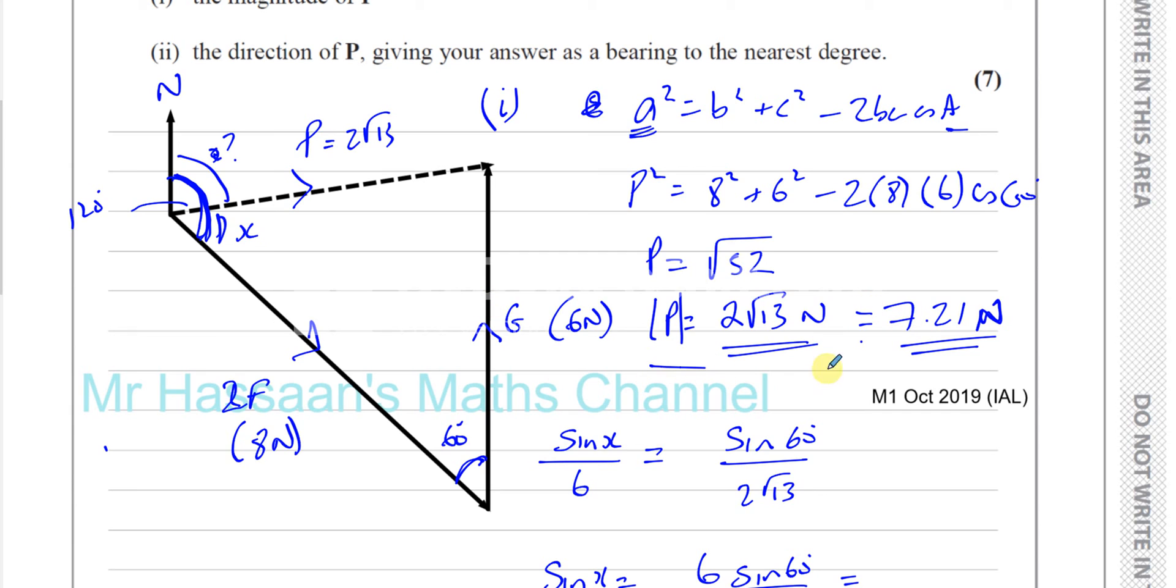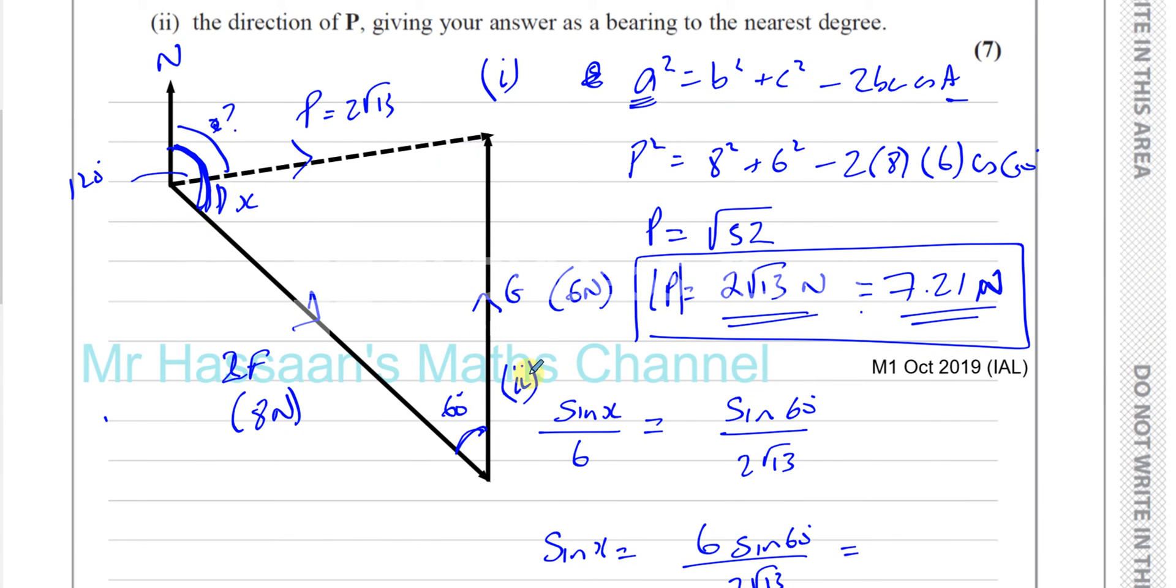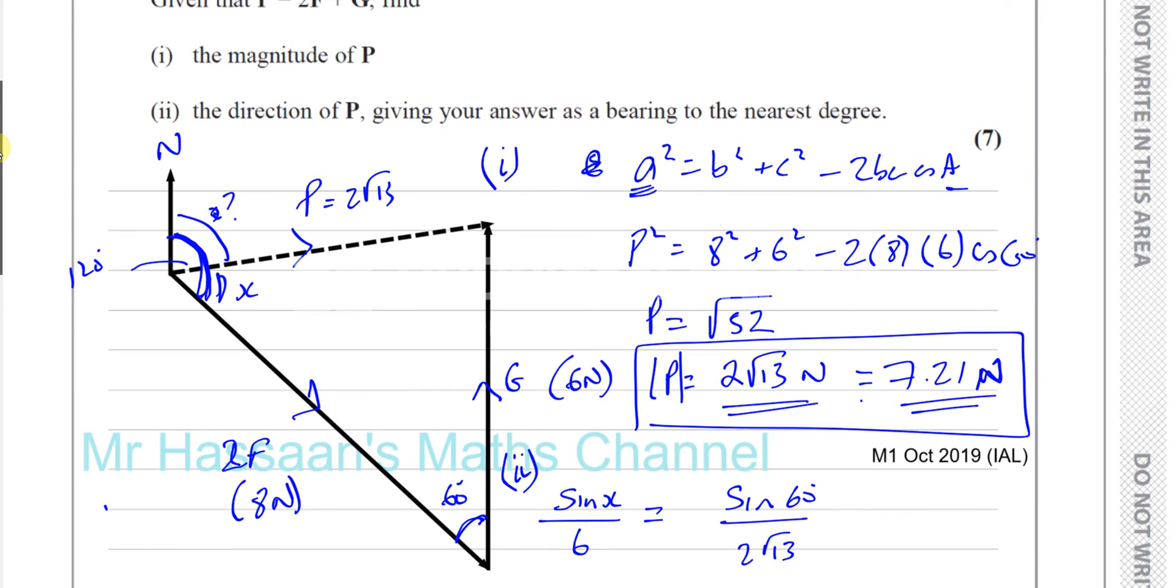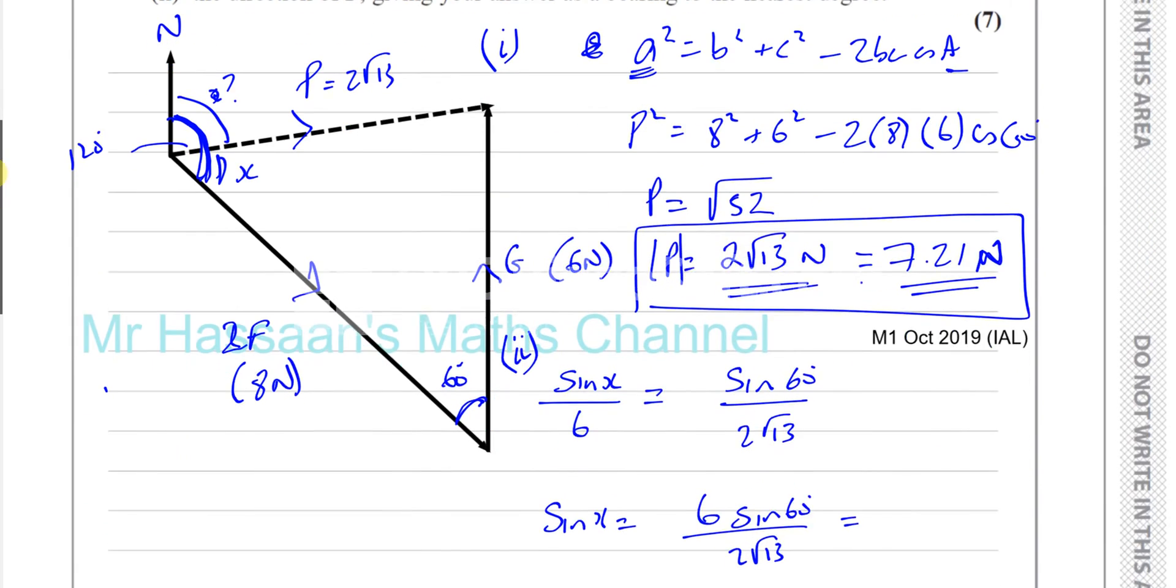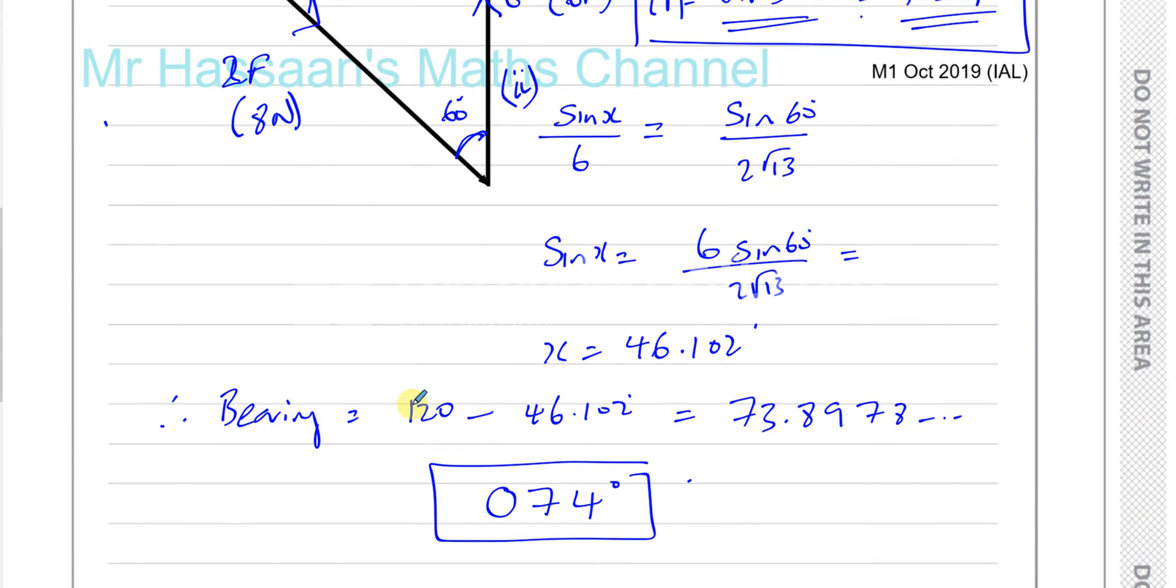And there's part two, the bearing. Okay, all found by making this vector diagram, which is pretty simple. There's other ways to do this question as well, by resolving horizontally and vertically, but I find this to be far easier to deal with. Okay, so there we have the answer to question number seven.